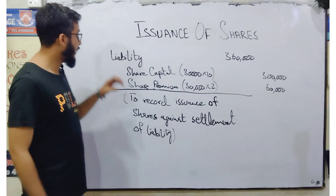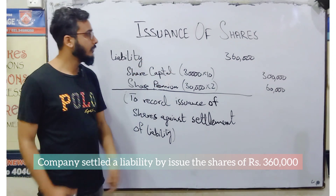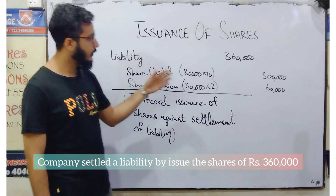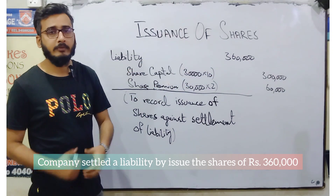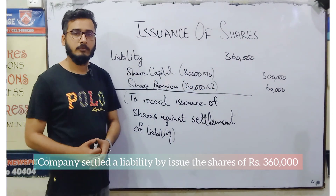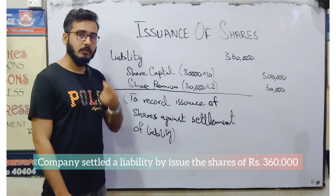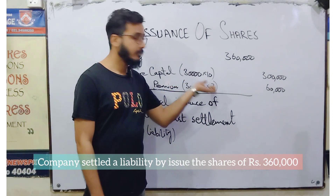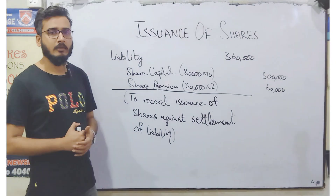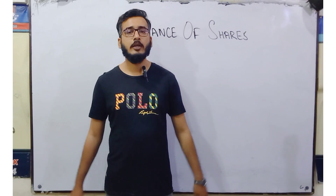Entry number five: we settled a liability by issuing shares. The liability amount was 360,000 and the share price is rupees 12. We calculate the number of shares: 360,000 divided by 12 equals 30,000 shares. Share capital is credited by par value only — 30,000 multiplied by 10 equals 300,000. Share premium is credited by the excess over par — 30,000 multiplied by 2 equals 60,000. Narration: to record issuance of shares against settlement of a liability. That was all for today's video — see you in the next one with continuation of the same topic. Take care and good luck.